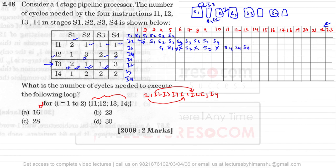I3 requires three clock cycles in stage S4. Now, instruction I4 can get stage S1 only at the sixth clock cycle, because S1 is occupied by I3 at clock cycles 4 and 5. So I4 enters S1 at clock cycle 6 and requires only one clock cycle there.